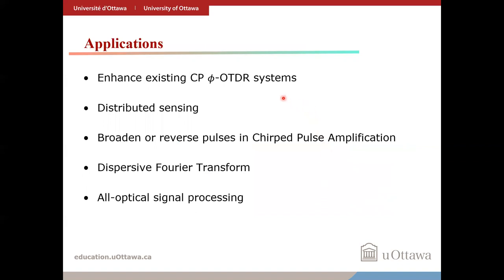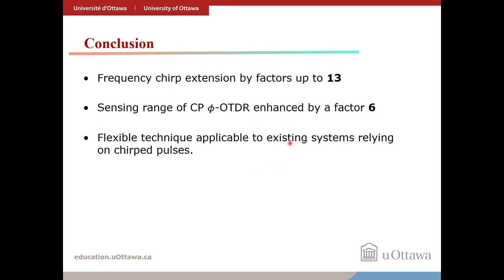The technique applied in this work can be utilized in existing chirped pulse φOTDR systems to enhance the sensing range. The present experiment only investigated local temperature changes, but the method can be extended to distributed measurements. The ability to broaden or even reverse chirped optical pulses could be useful in chirped pulse amplification, dispersive Fourier transforms, or other similar systems for all-optical signal processing. In conclusion, the extension of the chirping range of optical pulses by factors up to 13 is demonstrated. The sensing range of a chirped pulse φOTDR system was enhanced by factors up to 6, and the technique can be applied to existing systems and other optical techniques.